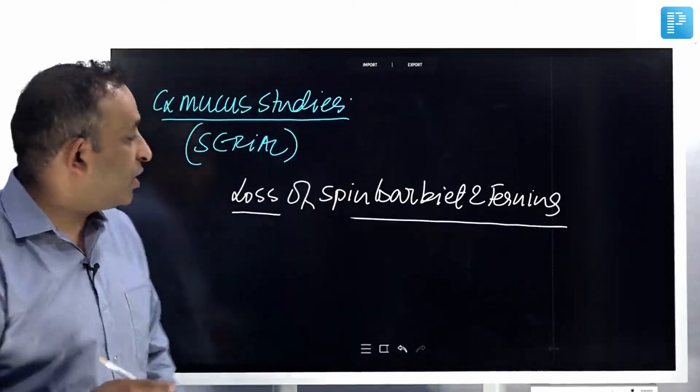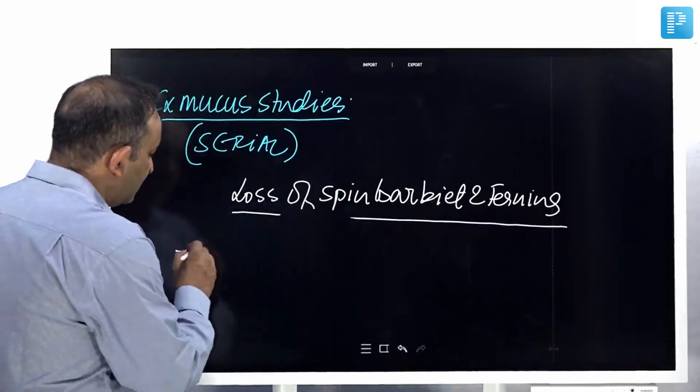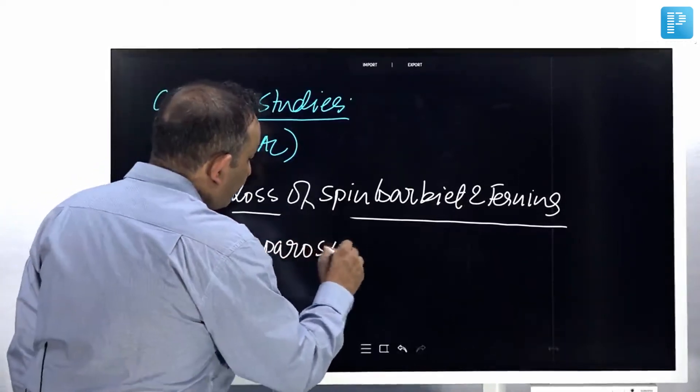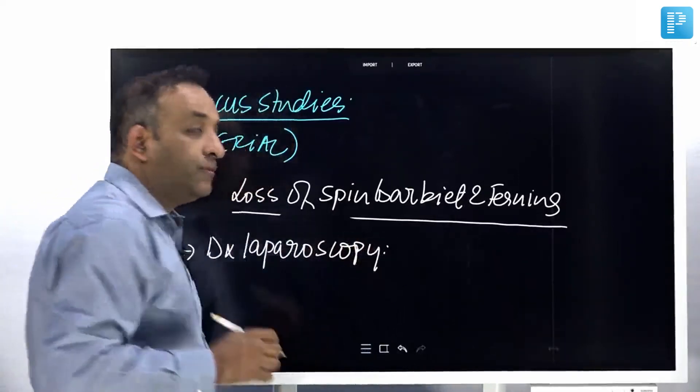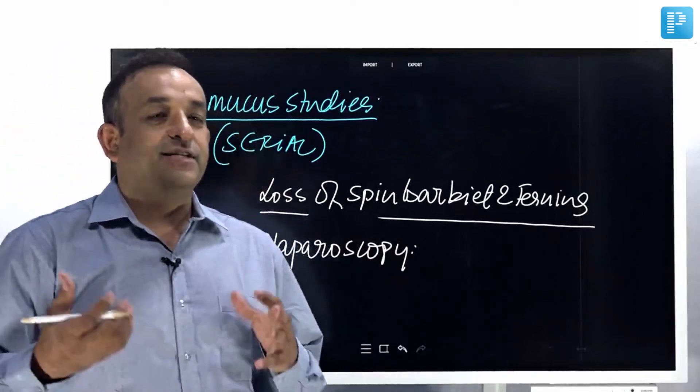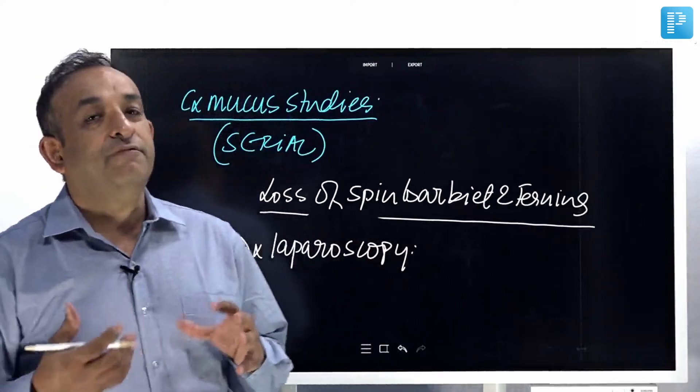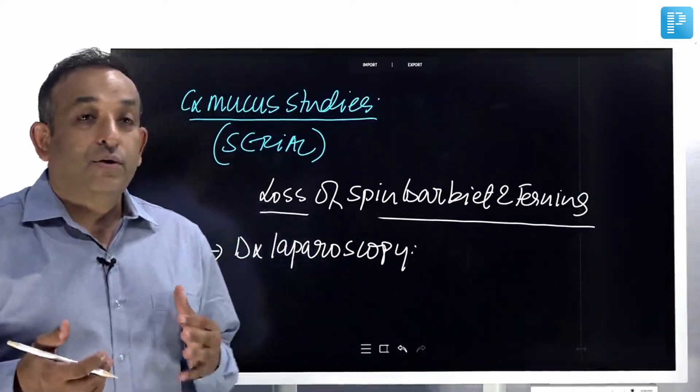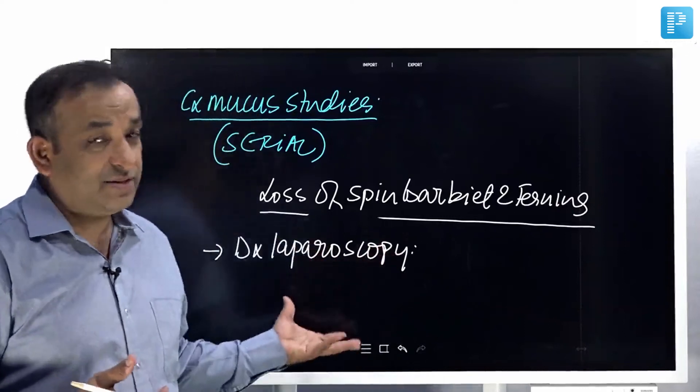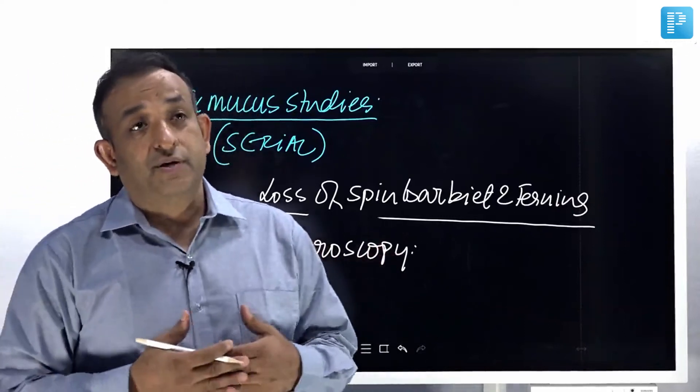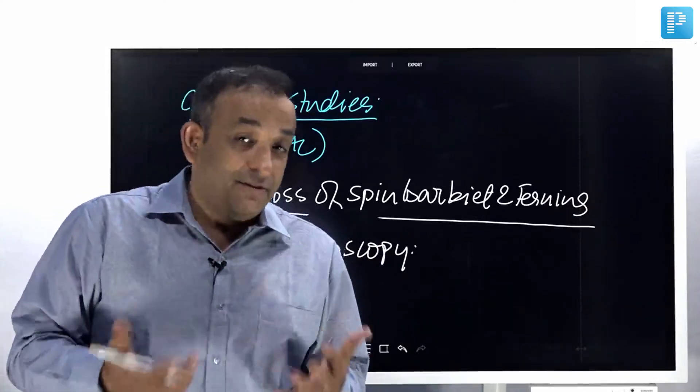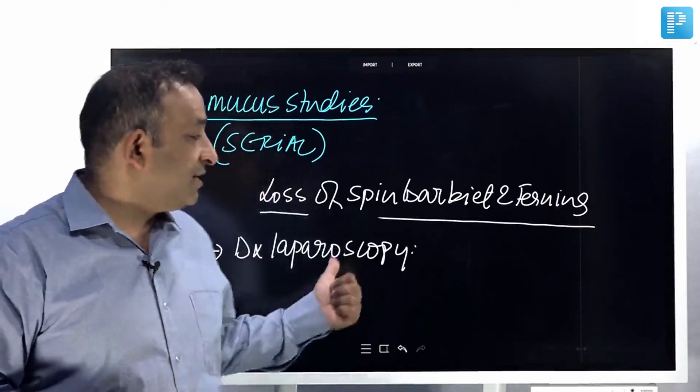You can also do diagnostic laparoscopy. But please, that is too big a test to diagnose something as simple as ovulation. Ovulation is regularly assessed in the OPD by follicle monitoring, serum progesterone, or serum LH. Cervical mucus studies are also fine. But doing a laparoscopy just for assessing ovulation, we do not regularly do it. In fact, we never do it.